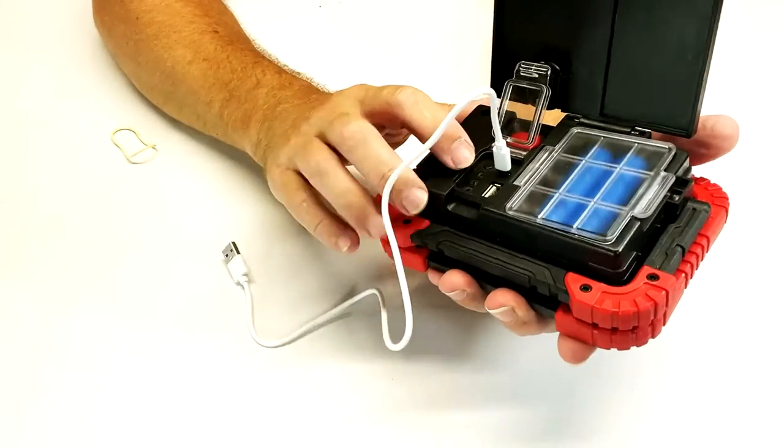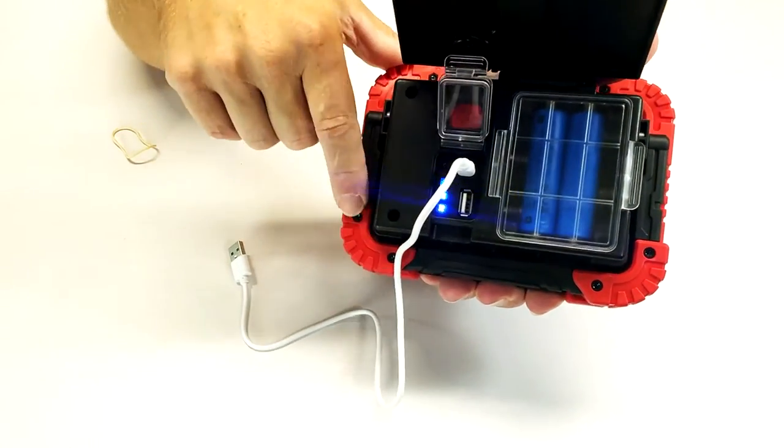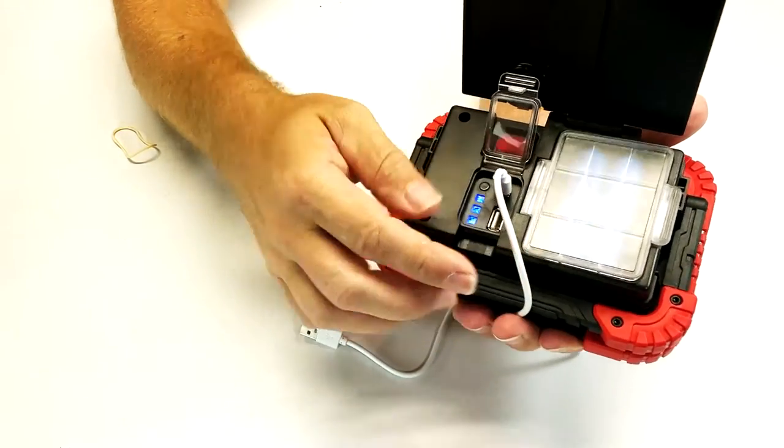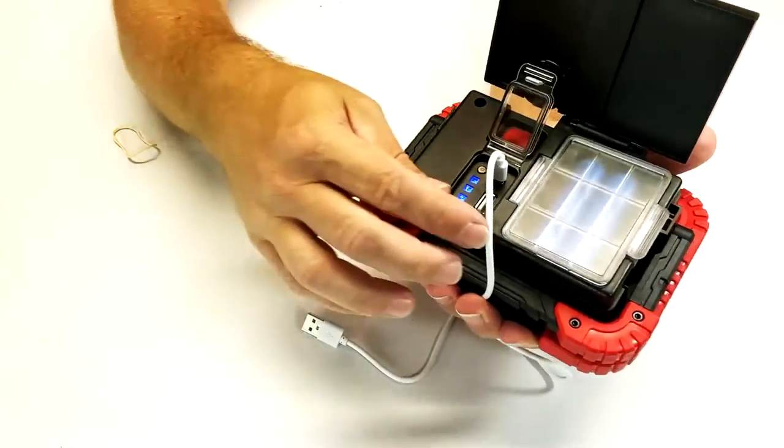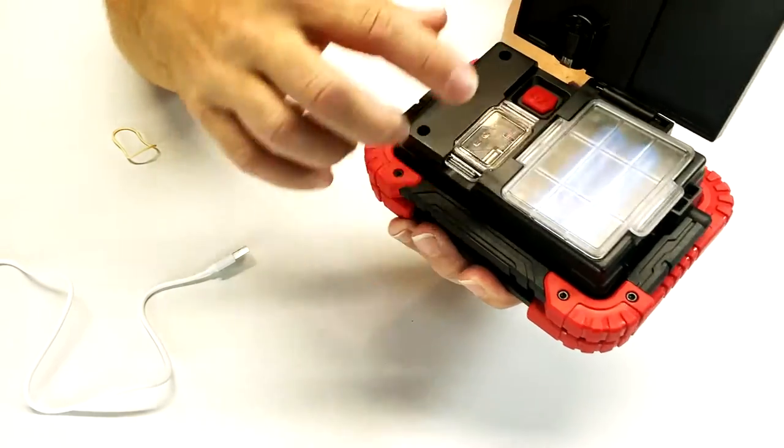Once the device is plugged in and ready to charge, you press this button and those are your indicator lights. It's going to indicate that it's charging and it's going to indicate your strength for the batteries. These batteries come fully charged and that's a real bonus.